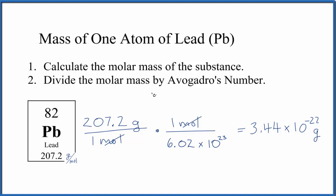Finally, if you were given an isotope of lead, say lead-206, instead of using this average atomic mass, you would use the mass number for lead.